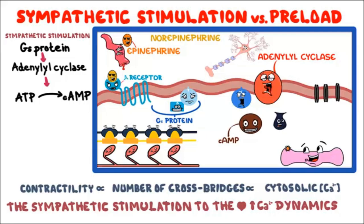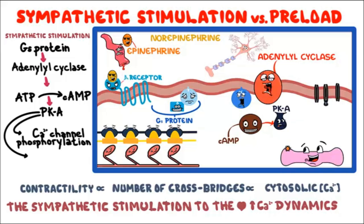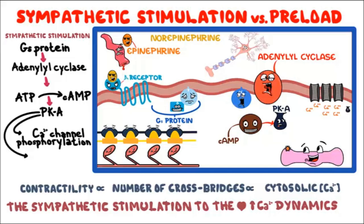Increased cyclic AMP activates cyclic AMP-dependent protein kinase. Protein kinase has two main important effects. First, it phosphorylates sarcolemmal L-type calcium channels, causing them to open. As a consequence, this causes increased calcium entry into the cell during the plateau phase of the action potential. Increased calcium entry leads to enhanced release of calcium by the sarcoplasmic reticulum via calcium-induced calcium release. More calcium means more cross-bridges cycle and contractility increases.